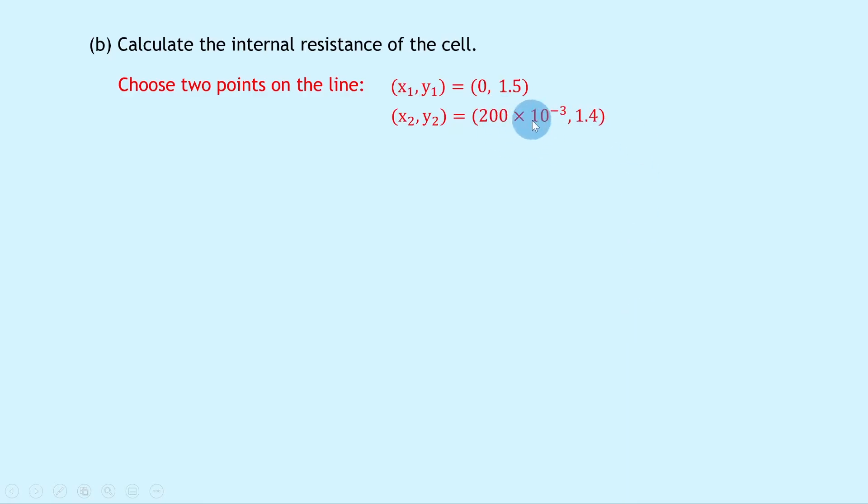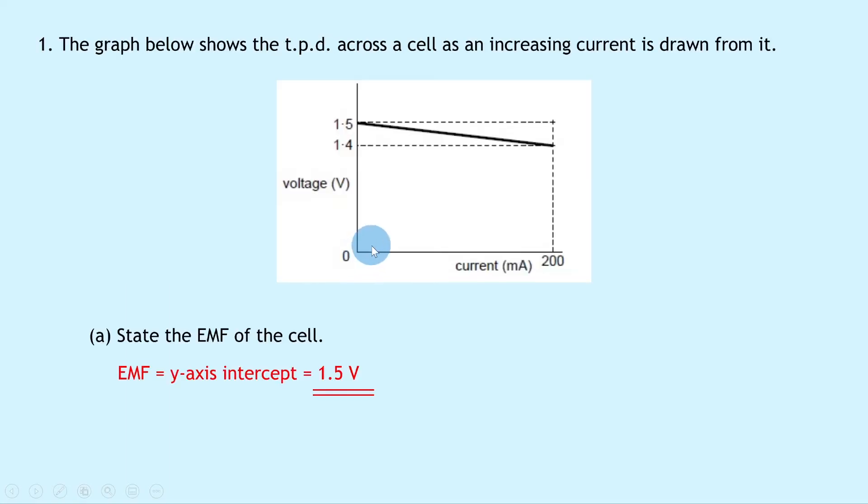Notice I've changed the milliamps for the x-axis into amps because it wouldn't work otherwise, and you can see the obvious points that I've chosen is 0, 1.5 on the line and 200 milliamps and 1.4. So we've got 0, 1.5 and 200 milliamps, 1.4, but we need to change the milliamps into amps. So just watch out for any graph that you're ever using to check that you're not being given prefixes as some of the units. So here we need to convert from milliamps to amps.